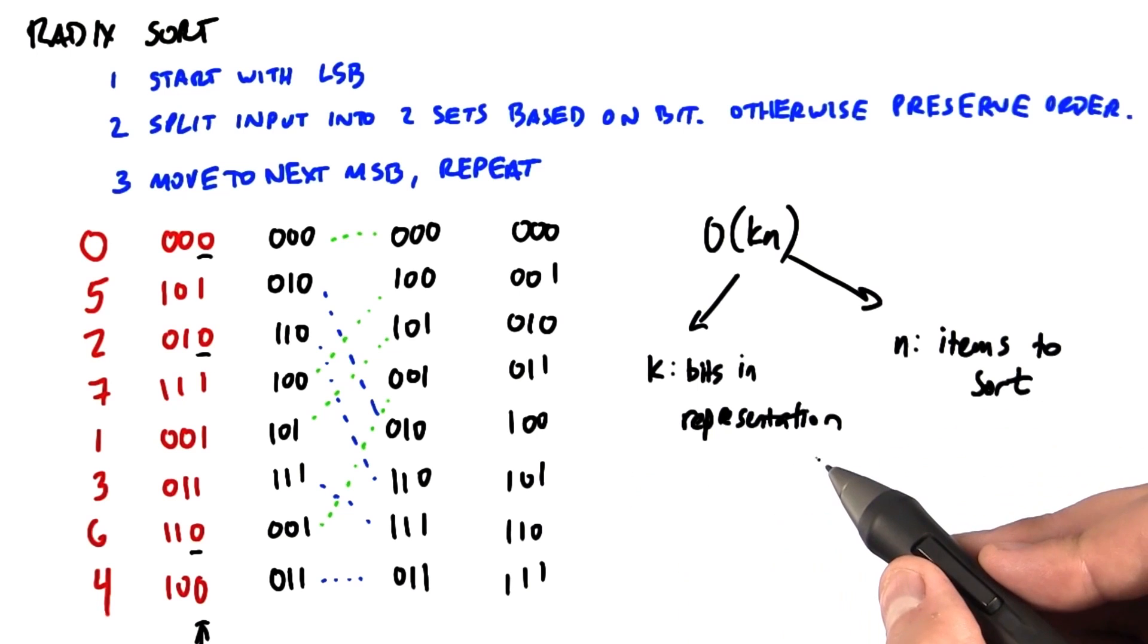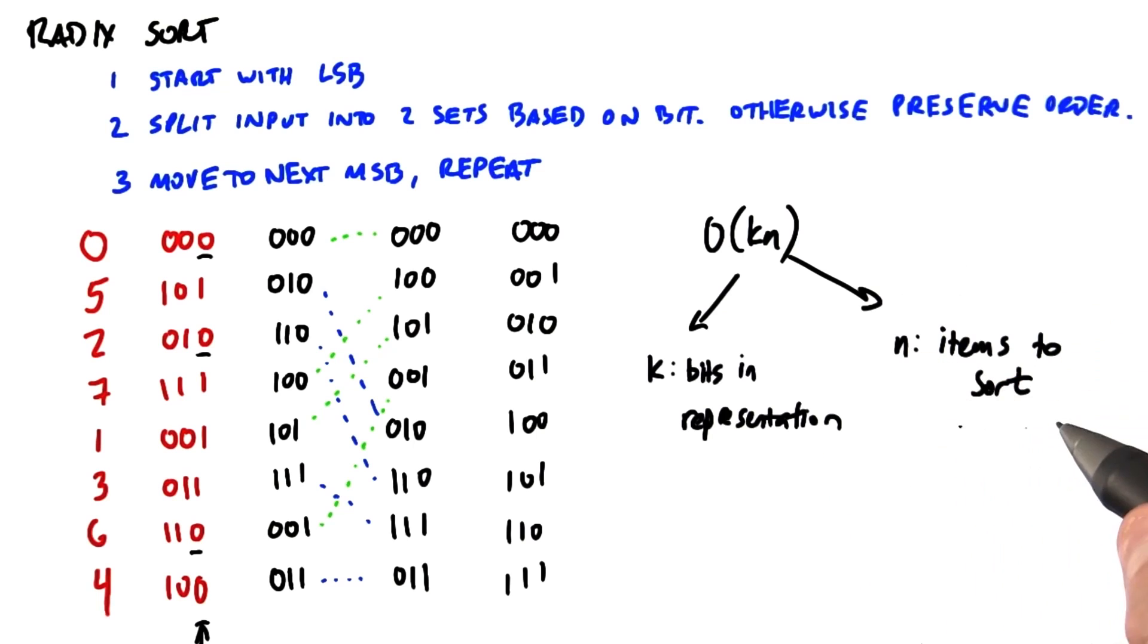Generally, K is constant, say a 32-bit word or a 64-bit word, for any reasonable applications. And so in general, the work complexity of this is mostly proportional to the number of items that we need to sort. And so that's a superior work complexity to any of the sorts that we've talked about to date,